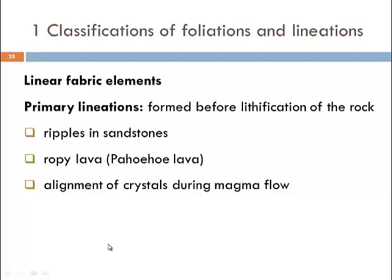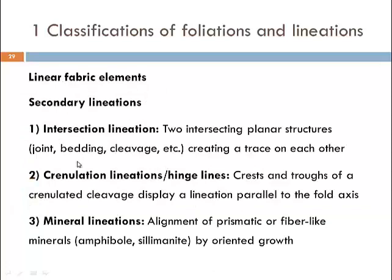Let's talk about linear fabric elements. They can be primary — like ripples in sandstone forming a linear arrangement, pahoehoe lava arranged in a uniformly oriented linear fashion, or alignment of crystals during magma flow — but we are not interested in these primary fabric elements. We need to be aware that they might exist, but in structural geology we essentially look at secondary lineations formed by deformation processes.